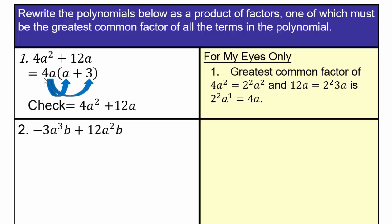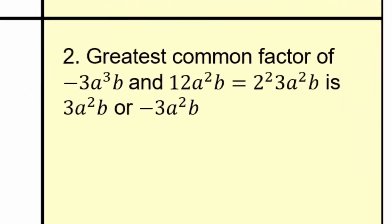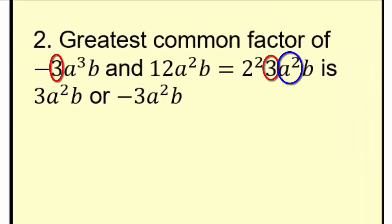You can always check to make sure your factors are correct — you should never get factoring problems incorrect because you can always check them. For the negative 3a cubed b and 12a squared b, we can pull out a negative 3a squared b or just a 3a squared b.